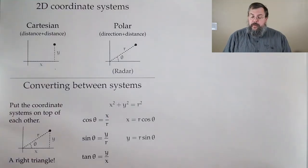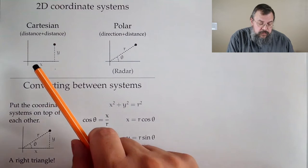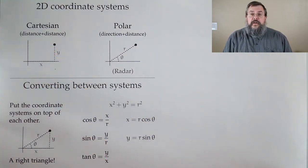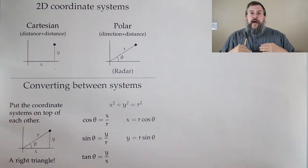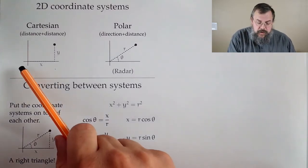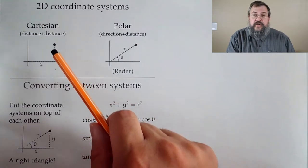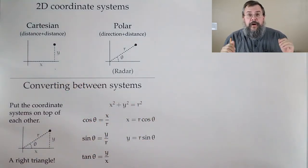Our 2D coordinate systems — there are really two of them. The Cartesian coordinate system is distance and distance. In other words, there are two distances involved. We think of it as how much do we move in two directions that are perpendicular to each other. One direction we call the x direction, the other we call the y direction. With those two distances, we can locate anything we want.